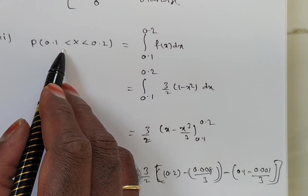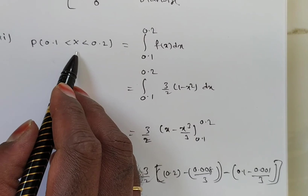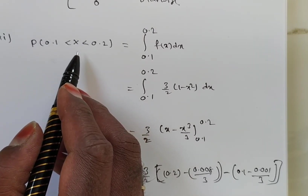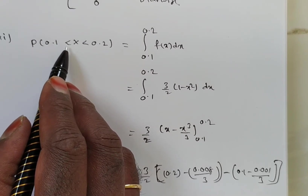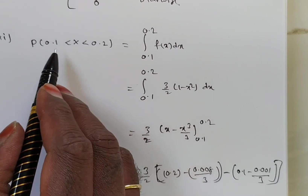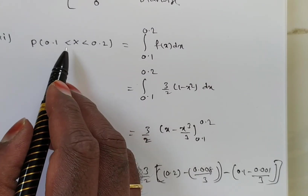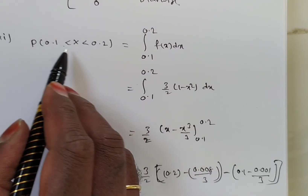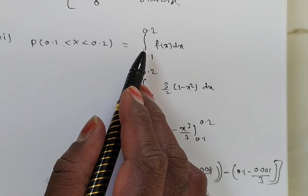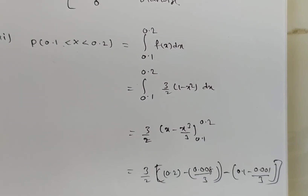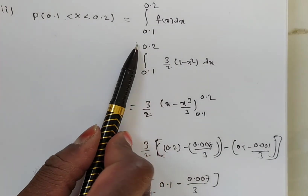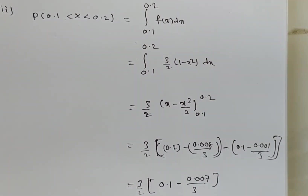Note that for continuous random variables, whether you write strict or non-strict inequalities (less than or less than or equal to) makes no difference — the integral limits remain the same, unlike with discrete random variables.